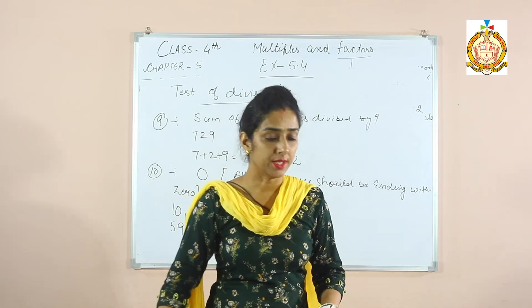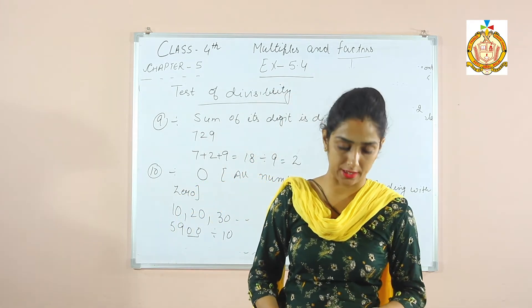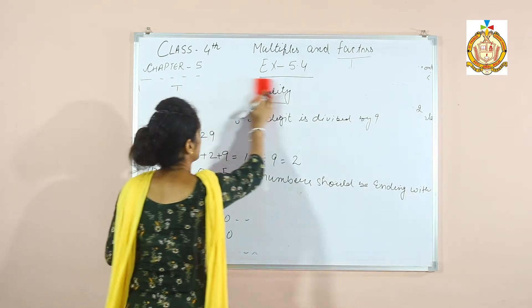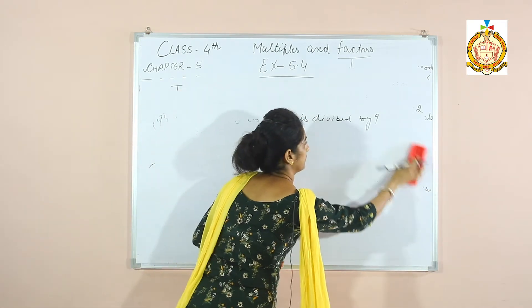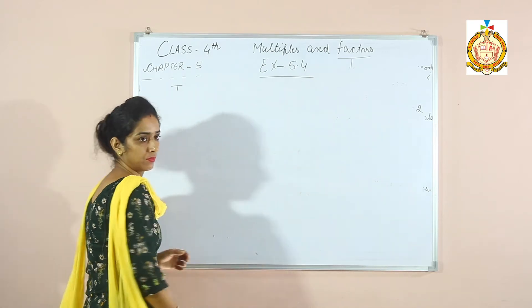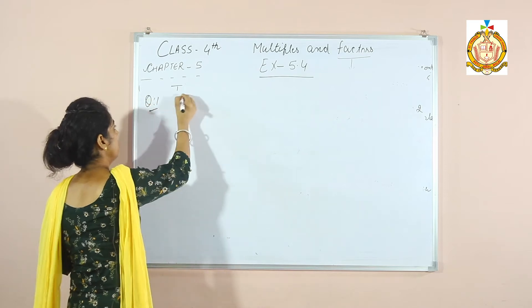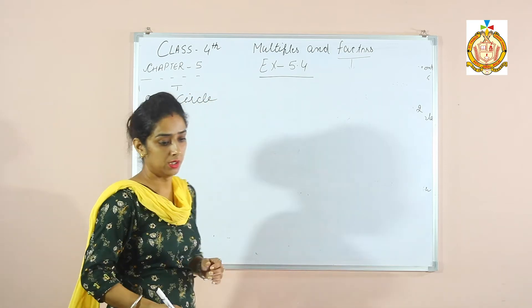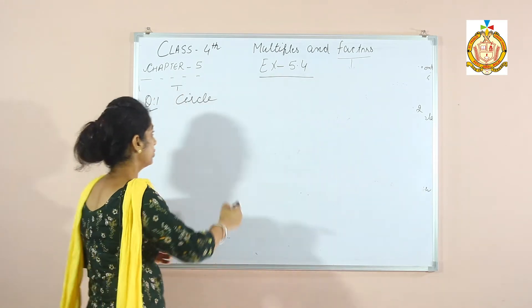I hope these rules are clear. Now let's move on to the exercise. Question number 1: circle the numbers that are divisible by 2.